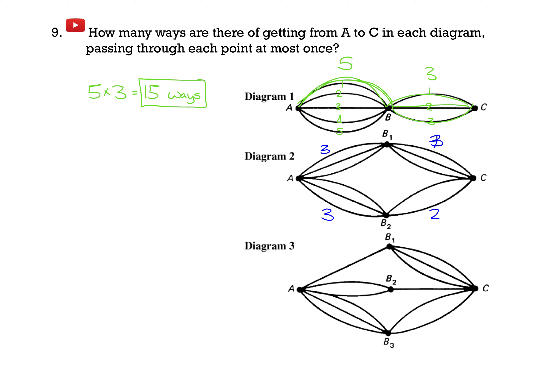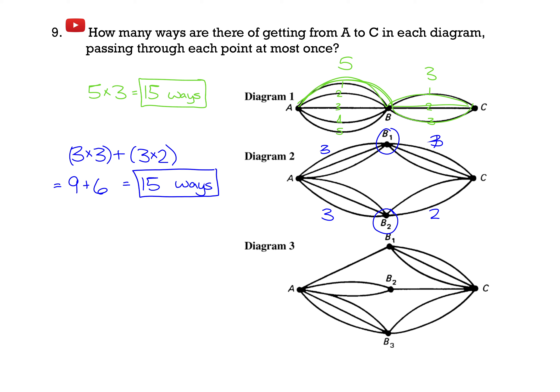Now, since there are multiple paths from A to C — passing through either B1 or B2, not both — I'll deal with each separately. Going from A to C through B1: 3 ways times 3 ways = 9. Going from A to C through B2: 3 ways times 2 ways = 6. Since these are two distinct paths, I add them: 9 plus 6 equals 15. So there are 15 ways to get from A to C passing through either B1 or B2.